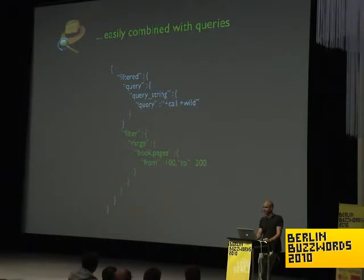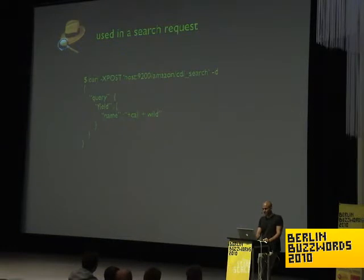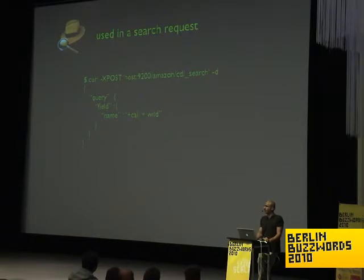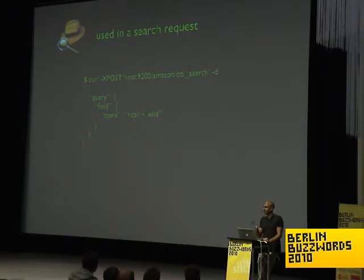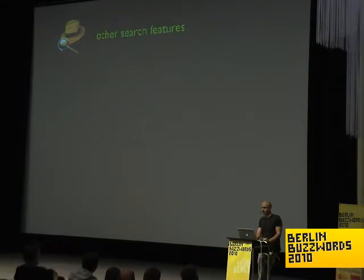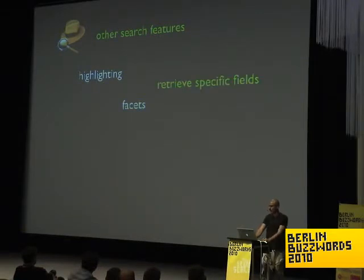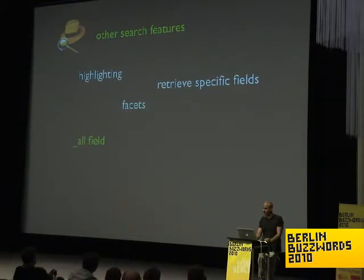We can easily combine filters with queries using the filter query to search on everything that has a 'call' and 'wild' within all terms, but only within books that have pages in the range 100 to 200. Range queries are a great example to use filters — usually they don't mean a lot when it comes to scoring. As for how you use it: GET requests can have a body, but not all HTTP clients support it, so you can use POST and send the search request as a body with the full DSL of the query and filters.